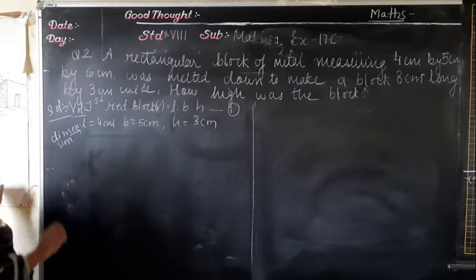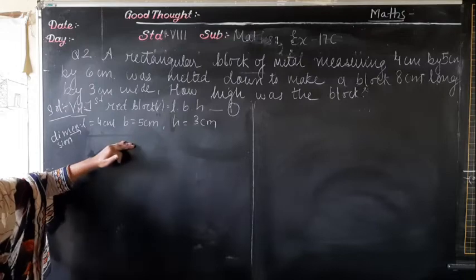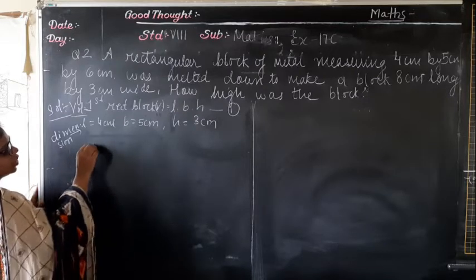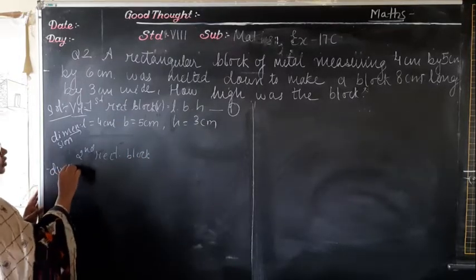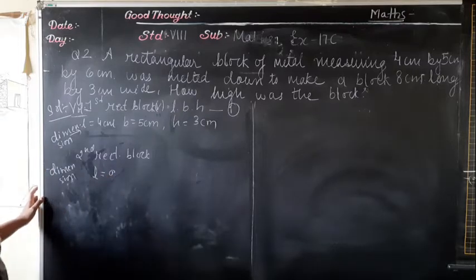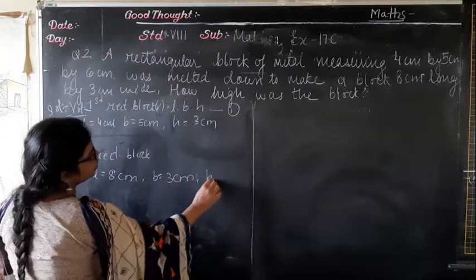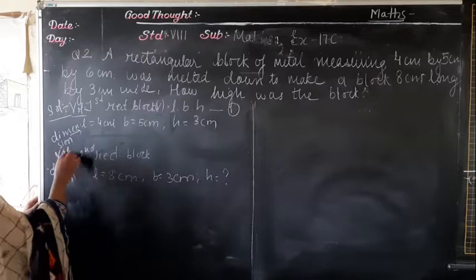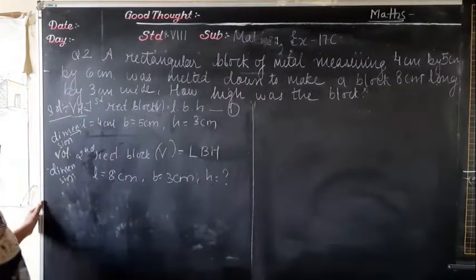After melting down, the first rectangular block forms another block. For the second rectangular block, the dimensions are: L = 8 cm, B = 3 cm, and H you have to find out. So the volume of the second rectangular block = L × B × H.